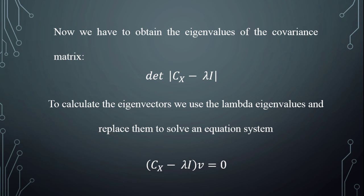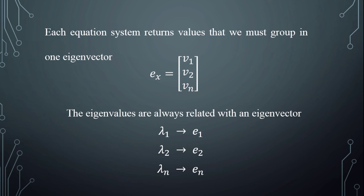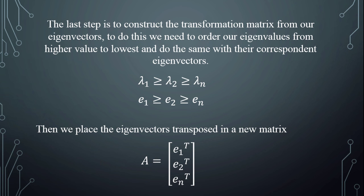Now we have to find the eigenvalues of the covariance matrix using the determinant of Cx minus lambda I. To calculate the eigenvectors, we use the two lambda eigenvalues and substitute them to solve an equation system given by (Cx minus lambda I) times b equal to 0. Each equation system returns values grouped into one eigenvector. The eigenvalue lambda 1 is related to eigenvector E1. The last step is to construct the transformation matrix from our eigenvectors by ordering eigenvalues from highest to lowest, doing the same with corresponding eigenvectors, then placing the transposed eigenvectors into a new matrix called A, the transform matrix.